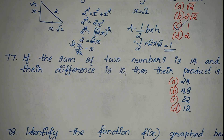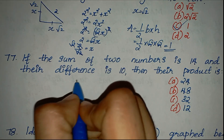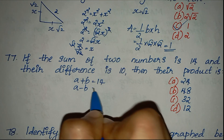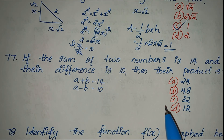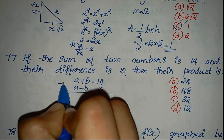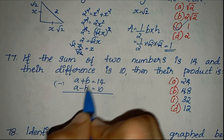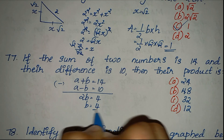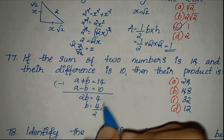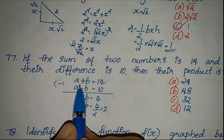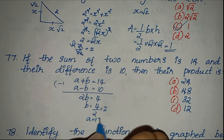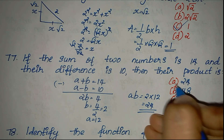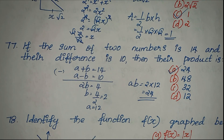Question 77: If the sum of two numbers is 14 — that is a plus b equals 14 — and their difference is 10 — that is a minus b equals 10. Subtracting the equations: 2b equals 4, so b equals 2. Substituting back: a equals 12.